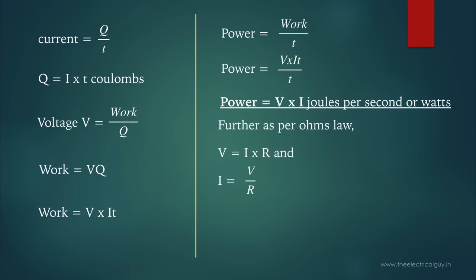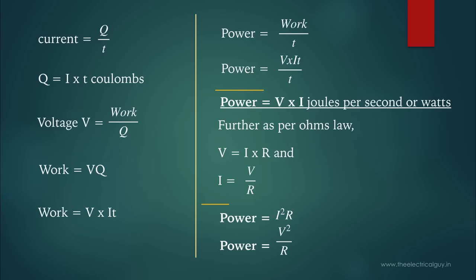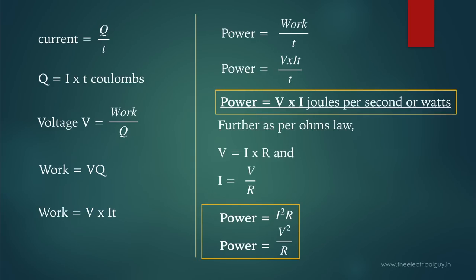Further, as per Ohm's law, voltage equals I into R, and current equals voltage divided by R. So if we put these values in the equation of power, we also get power equals I squared R, and power equals V squared divided by R. All these equations of power can be used to calculate the power of a DC circuit, depending upon the parameters you have.